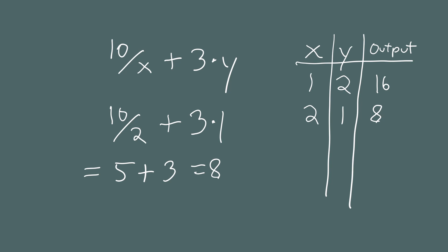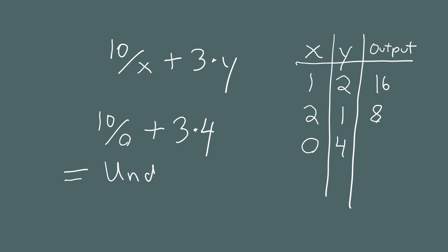One last thing: let's plug in 0 for x and 4 for y. That gives us 10 divided by 0 plus 3 times 4. If you try to do this arithmetic you run into a roadblock — 10 divided by 0 is undefined, so this calculation is undefined. That's the one forbidden value: you can't divide by zero.